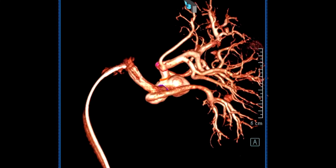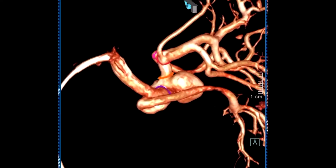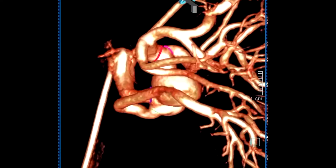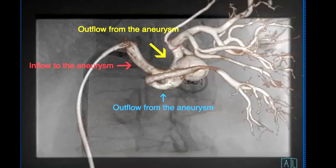Shown here is the 3D reconstruction made possible secondary to the rotational angiogram. This 3D reconstructed image shows inflow to the aneurysm via the mid renal artery and two outflow branches. Highlighted in blue is the branch that supplies the lower third of the kidney, and highlighted in yellow is the outflow branch that further divides into two branches supplying the upper two-thirds of the kidney.